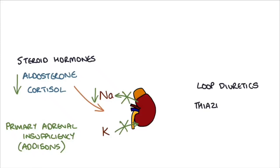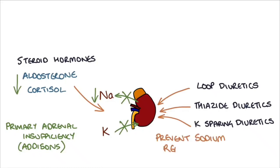Loop diuretics, thiazide diuretics, and potassium-sparing diuretics all act to prevent sodium reabsorption. As a result, these medications can all lead to hyponatremia.